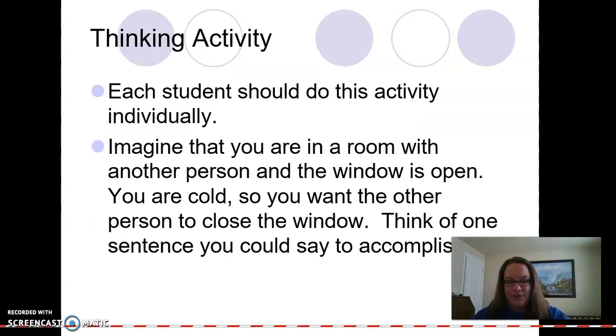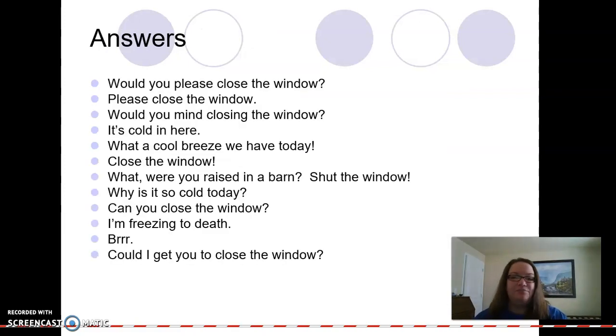So think about this. This is going to close up our discussion about function and what discourse function looks like. This is a very pragmatics-based discussion now. So if you are in a room with another person and the window is open, you're cold, so you want the other person to close the window. Think of one sentence you could say to accomplish this. I thought of more than one.